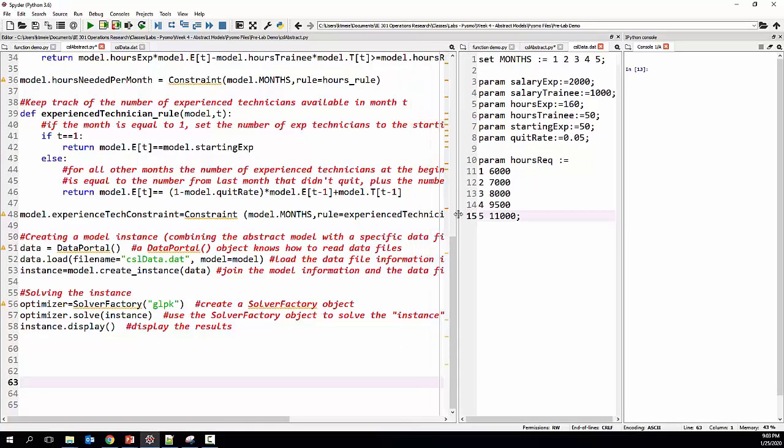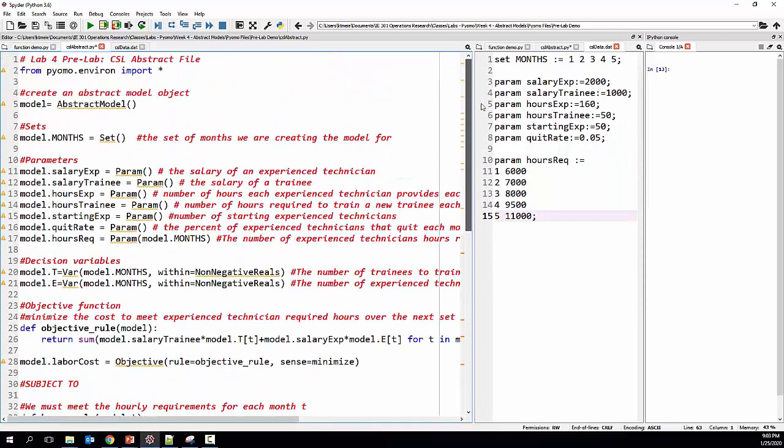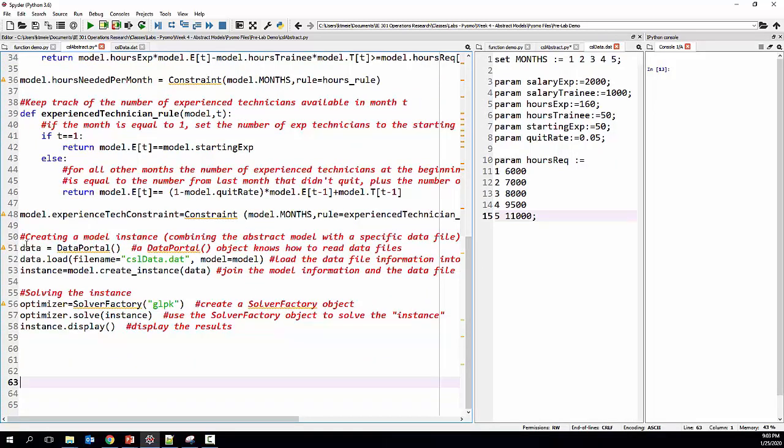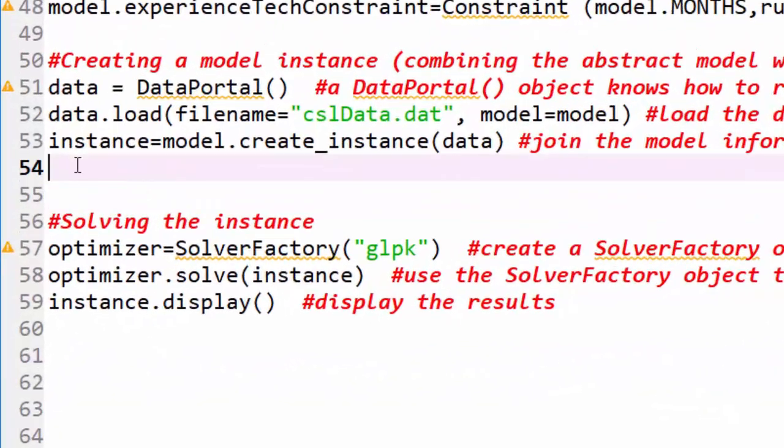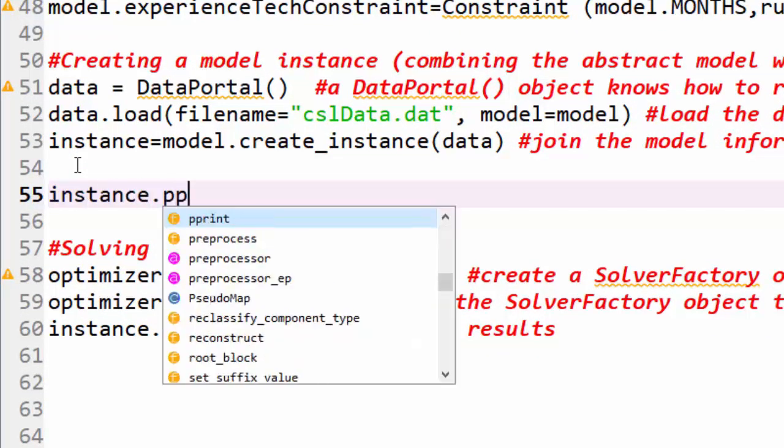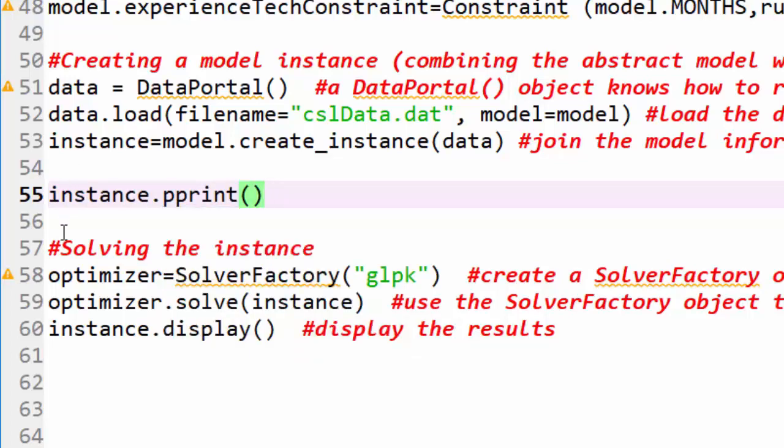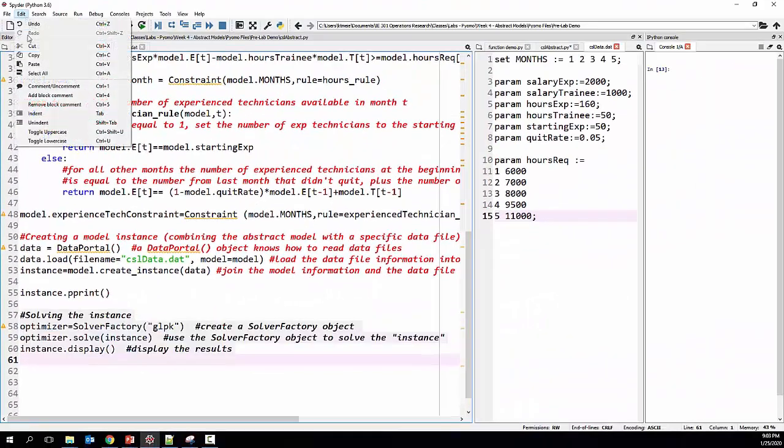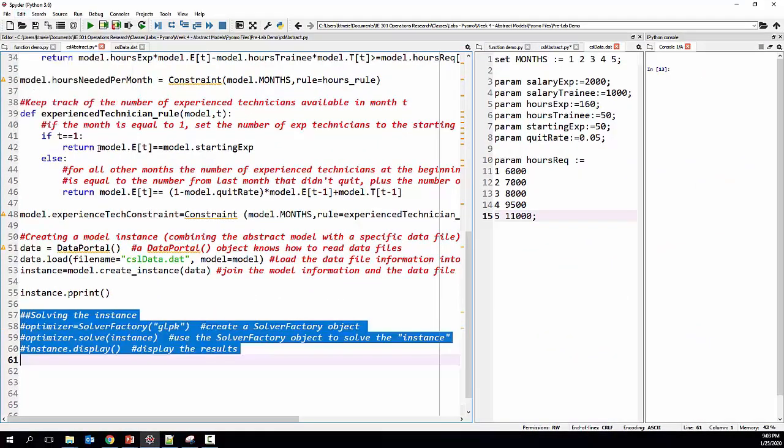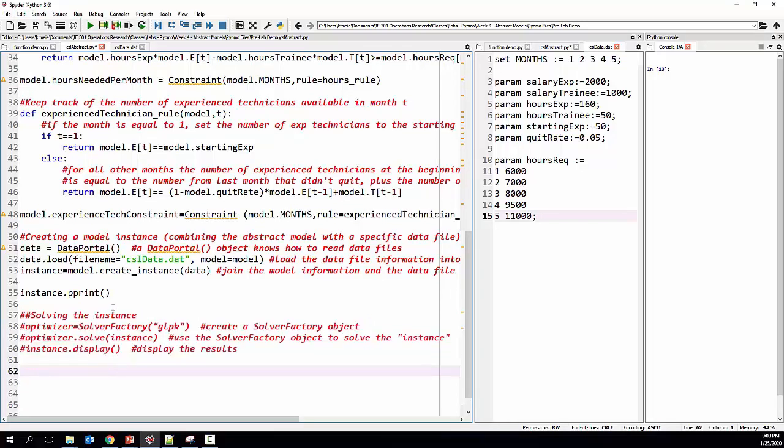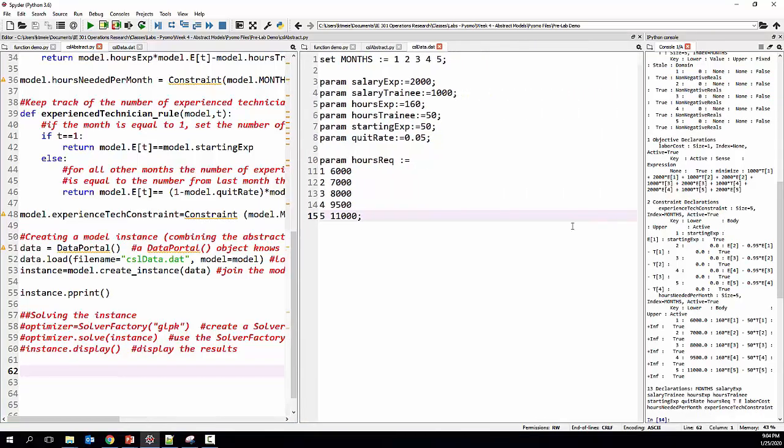So if I go over to my Spider screen here and I see this is the whole model that we've created. If I go down to the bottom, between the section of code that's creating the instance and then before solving the instance, if I type instance.pprint, I'm going to comment out these lines that are solving the model for now. So I've commented out the lines that solve the model. The only thing this file is going to do when I press run is this instance.pprint line will get executed. And in my console, we'll be able to see our model.